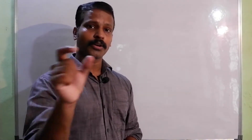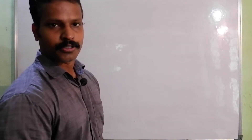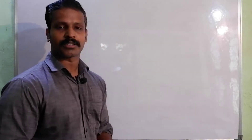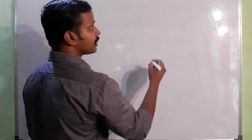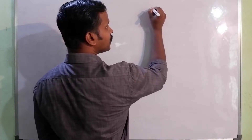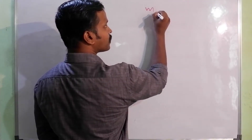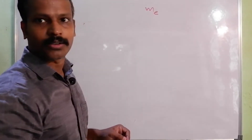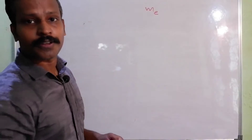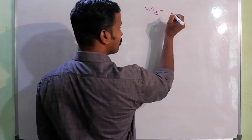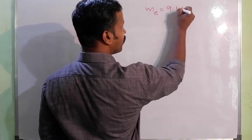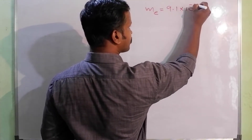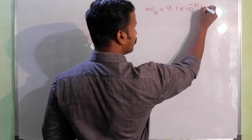In the third video, one electron and a proton are related to gravitational force and electrostatic force. Let's see what the idea of this is. One electron and a proton — the mass of electron is 9.1 into 10 raise to minus 31 kg.